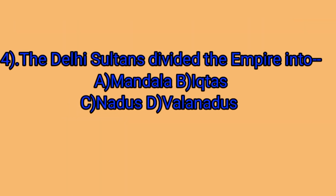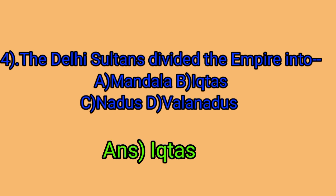The Delhi Sultans divided the empire into — A. Mandala, B. Ektas, C. Nadus, D. Valnadus. The correct answer is Ektas. Ektas were further divided into Paraganas and Villages.